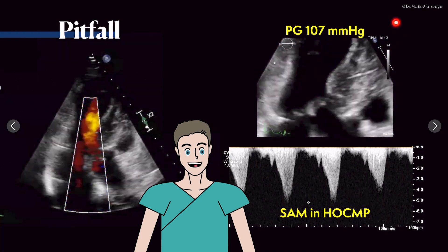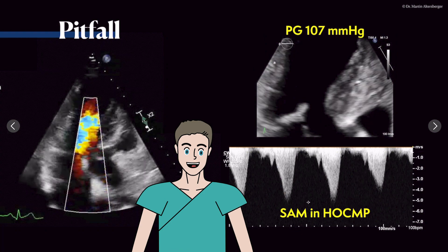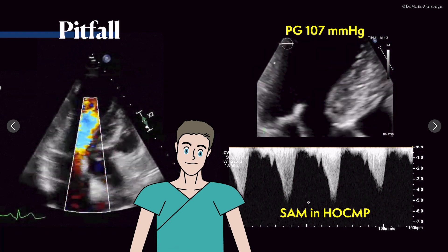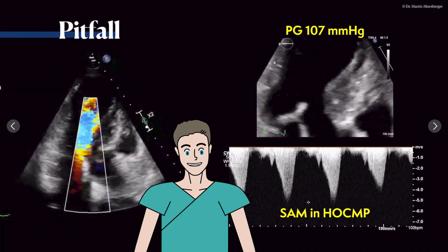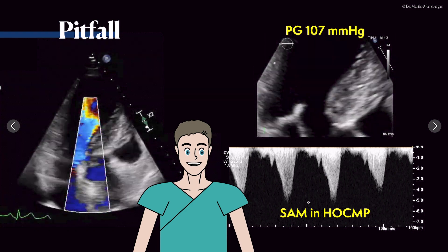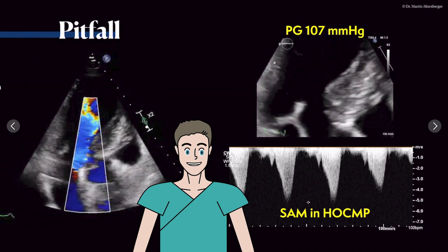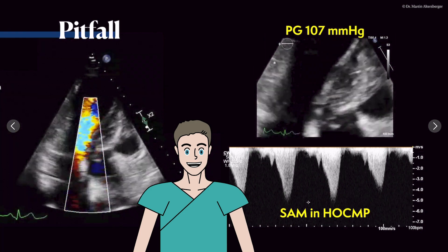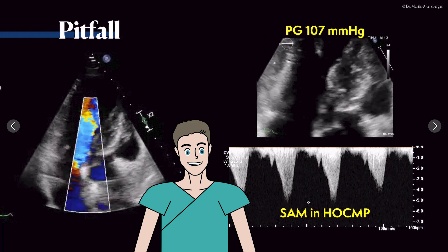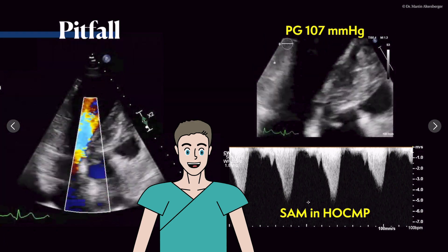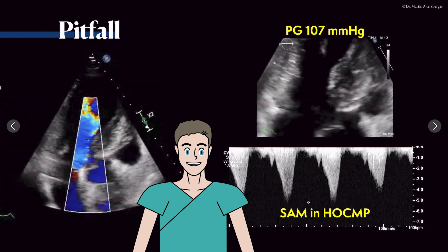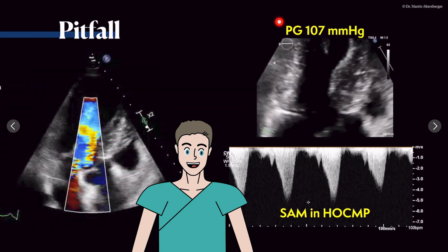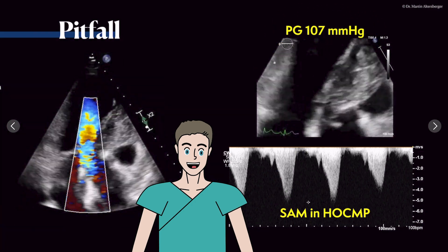The peak gradient was 107 millimeters of mercury. In the case of a SAM phenomenon or hypertrophic obstructive cardiomyopathy, the gradient is considered hemodynamically relevant when it exceeds 30 mmHg at rest and 50 mmHg during exercise. This evaluation was done at rest, so a peak gradient of 107 mmHg is truly a high gradient.